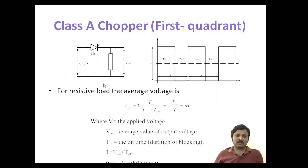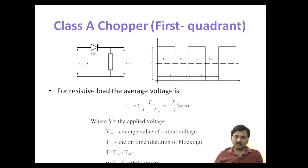When the thyristor is on, the output gets the source voltage. When it is off, the output voltage is zero. The average voltage V_avg equals the source voltage V into T_on divided by T (T_on plus T_off), also written as alpha times V — where alpha is the duty ratio. T_on is the turn-on time, T is the total period, and alpha equals T_on divided by T.